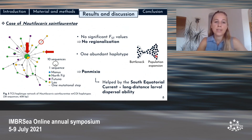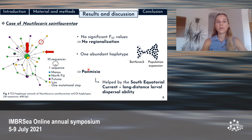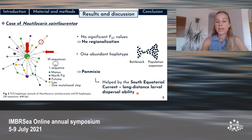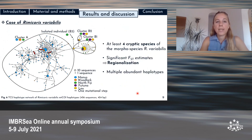The state of panmixia was observed for the population of Nautilocaris Saint Laurent Taillet, and this absence of regionalization may be due to the south equatorial current along with long-distance larval dispersal capabilities. On a general note, Alvinocarididae shrimps have an extended lecithotrophic larval stage, meaning they have a long-distance dispersal potential. For Hymenocera variabilis, another shrimp species, we identified at least four cryptic species with clear regionalization visible as distinct clusters.